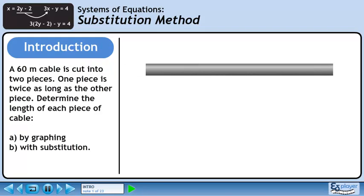A 60 meter cable is cut into two pieces. One piece is twice as long as the other piece. Determine the length of each piece of cable: A by graphing and B with substitution.